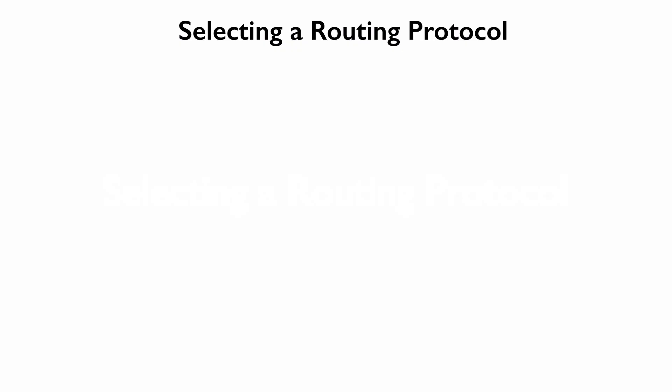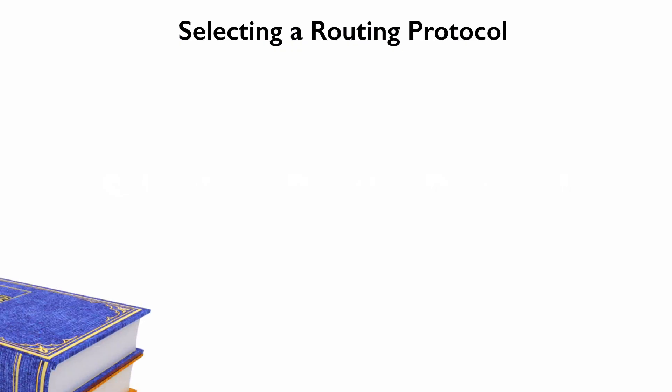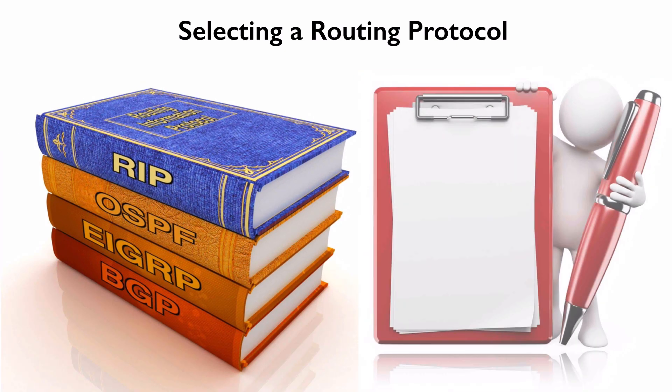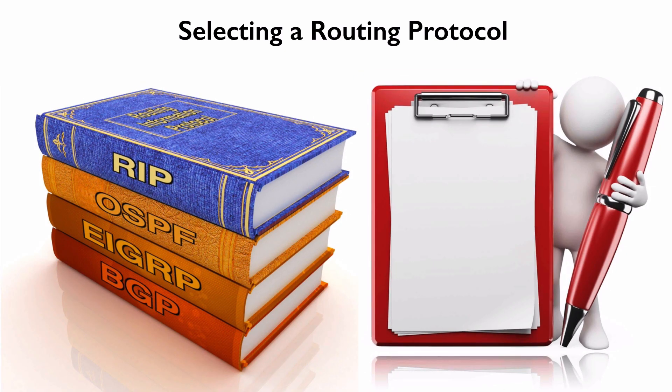In this video course, we're going to be talking about a variety of dynamic routing protocols that can help us keep the IP routing table in our routers up to date. There are different versions of RIP — RIP version 1, version 2, RIP next generation — OSPF versions 2 and 3, EIGRP, and we're going to see BGP version 4, and some extensions to BGP version 4 that make it multi-protocol BGP.